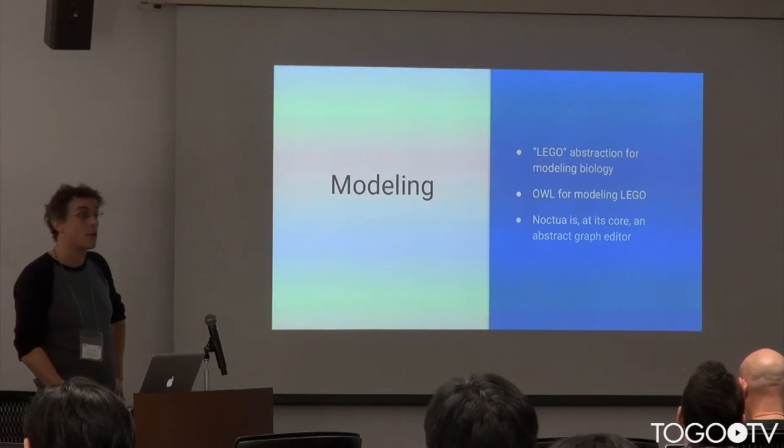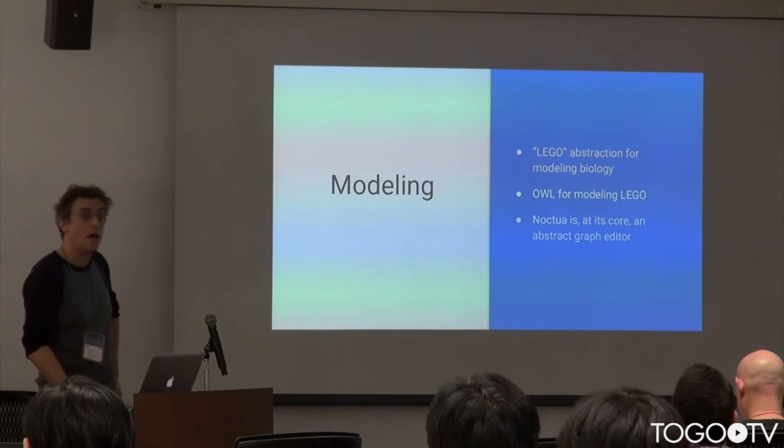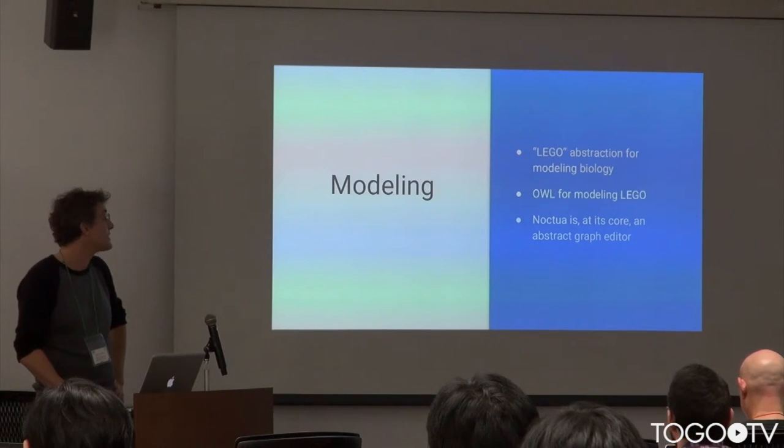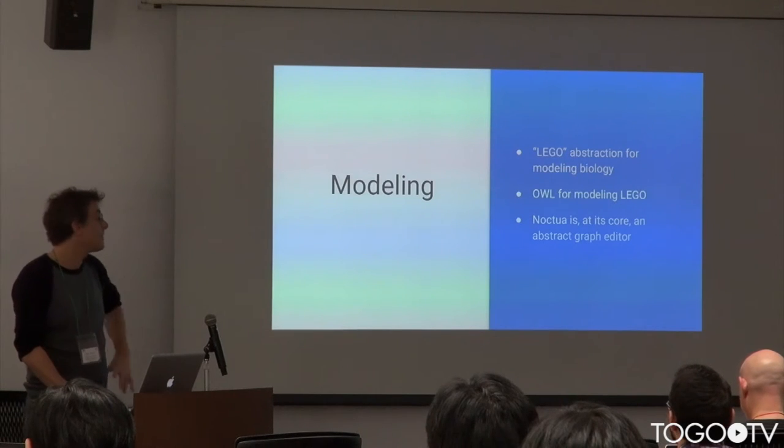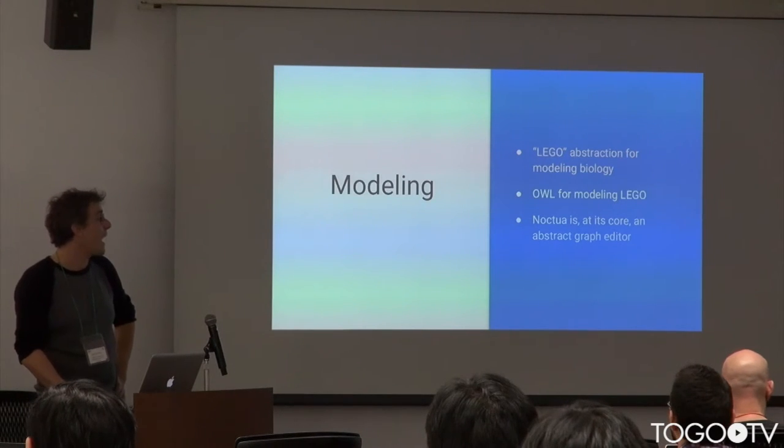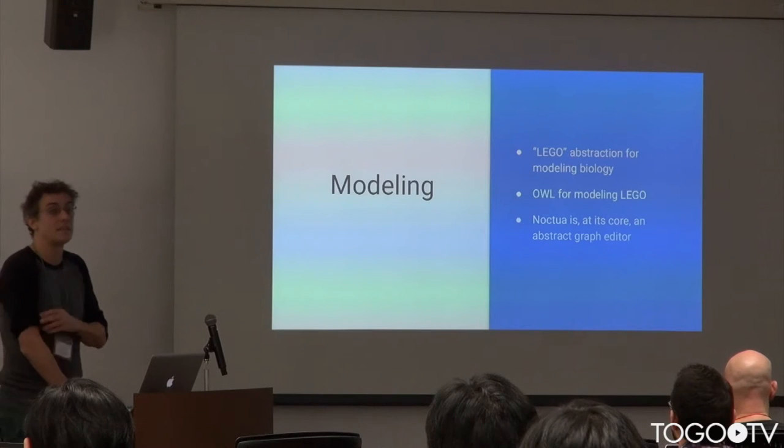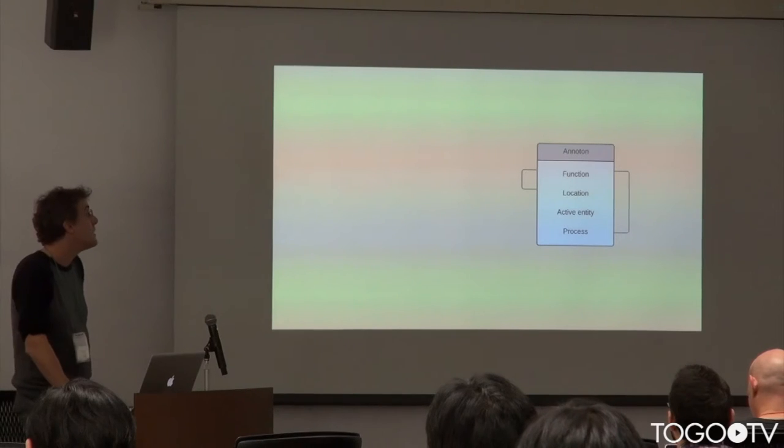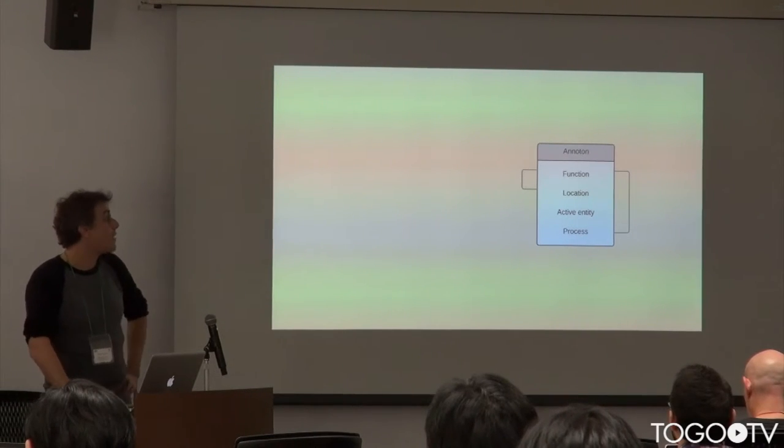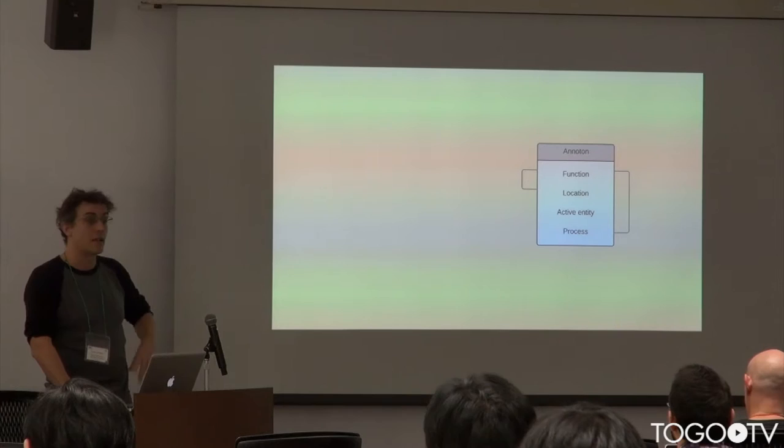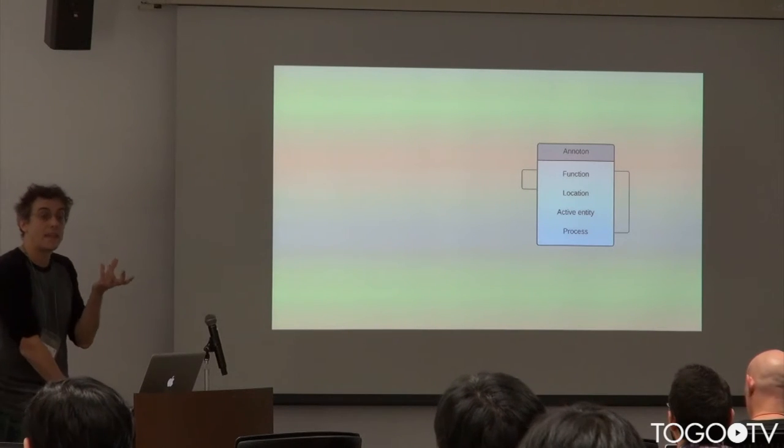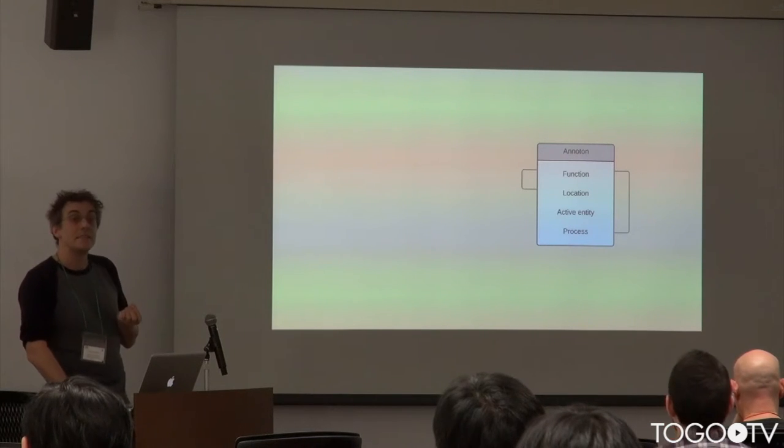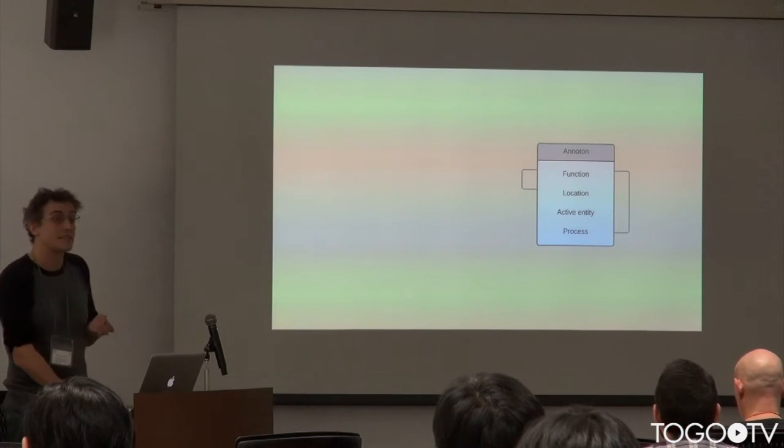So let's talk about the model. The model used within Noctua is called the Lego model by Hwayumi and Paul Thomas down at USC. We're using OWL for the actual modeling of the Lego inside the system. And Noctua itself is really just an abstract graph editor with a lot of stuff put on top of it to make it useful to curators. So fundamentally within the Lego model, there's the anatom. And the anatom is a way of modeling essentially what would be in a GAF row of information. So we have a function, a location, the entity, and the process that it's involved with.